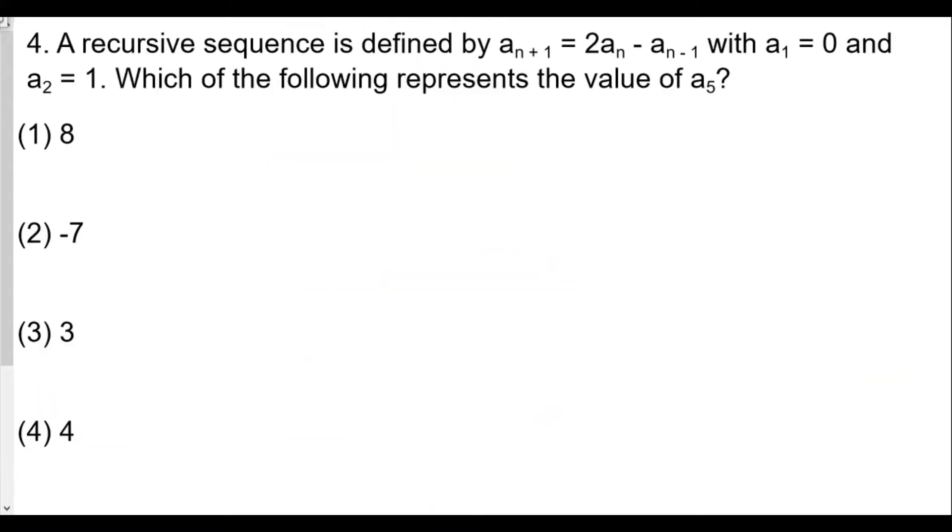Question number 4. A recursive sequence is defined by a(n+1) equals 2a(n) minus a(n-1), with a1 is equal to 0 and a2 is equal to 1. Which of the following represents the value of a5? The thing about recursive definitions is that you really can't just plug in the 5 without knowing what a4 and a3 are. We're going to have to go through all these. But we do know a2 and a1. This is important though. We want a3.